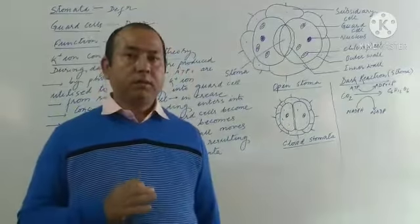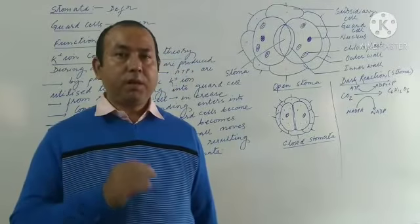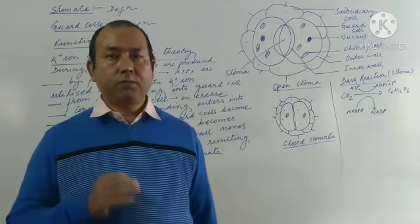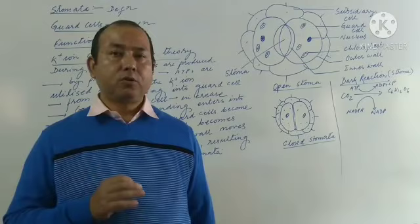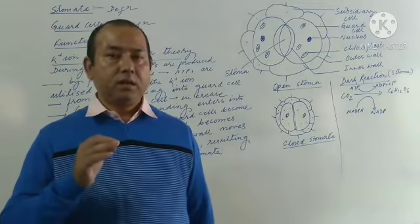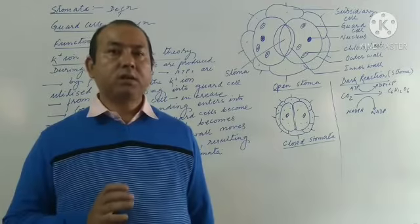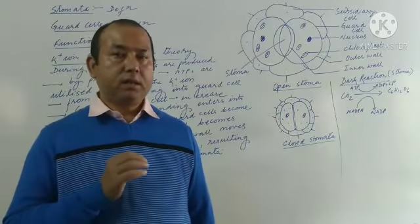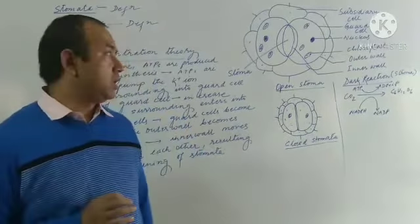Now the first thing you need to remember is the occurrence of dark reaction — where does it occur inside the chloroplast? If you are asked about the site of dark reaction, you should say stroma. Light reaction occurs in the thylakoid, whereas dark reaction occurs in the stroma.